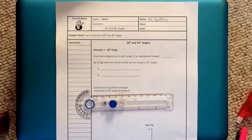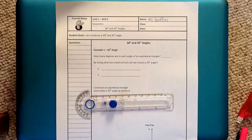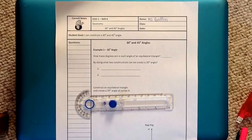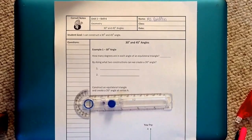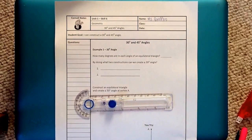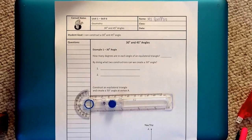Hi guys, today we're going to be looking at unit 1 skill 6. This is Miss Griffin as you can see, or here. Our goal for today is to be able to construct a 30 and 45 degree angle. We're going to start with 30 degree angles and then on the back side we'll take a look at 45 degree angles.